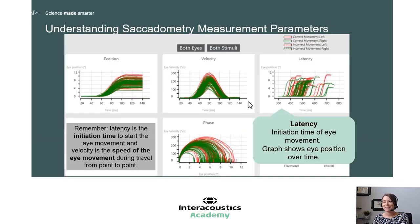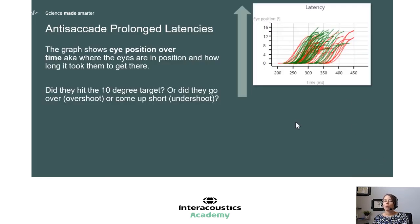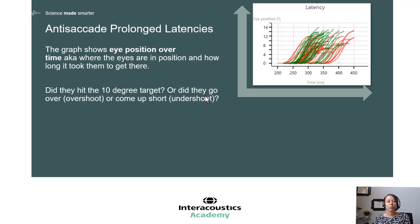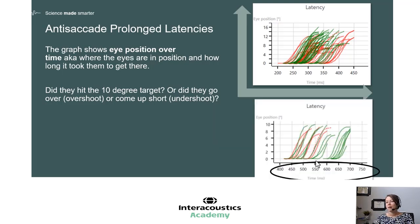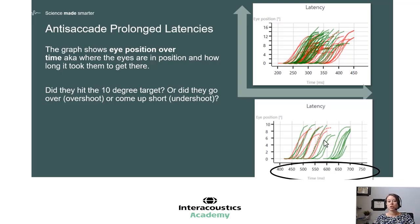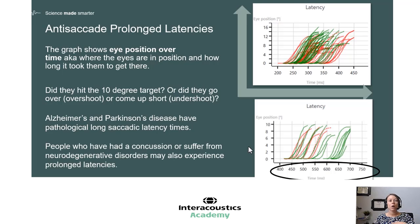The second measurement parameter is latency — the initiation time of the eye movement, which is that reaction time. Velocity is the speed of eye movement from point to point. With latency, our graph shows eye position over time. We utilize a 10-degree standardized target, which can also give you an idea of whether a patient is overshooting or undershooting that target. Our normal anti-saccade latency should be around 360 milliseconds based on normative data. Here's an example from a patient who had around 550 milliseconds for their average latency — almost 200 milliseconds longer than expected. Prolonged latencies can be seen in post-concussion patients, and also in Alzheimer's, Parkinson's disease, or other neurodegenerative disorders.